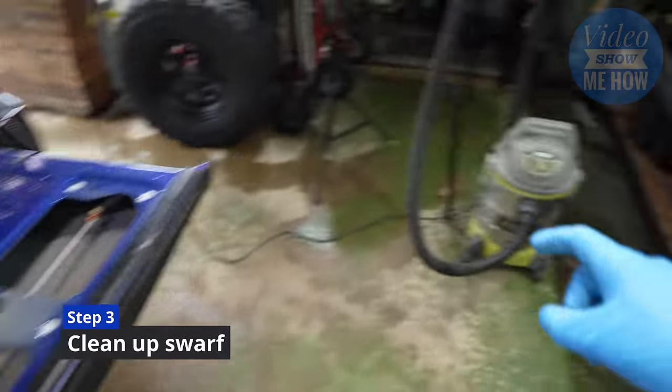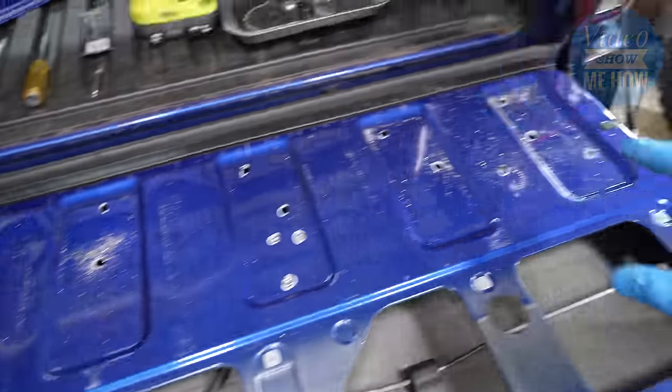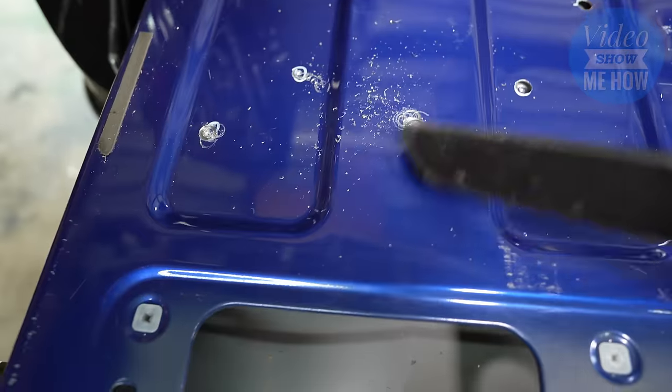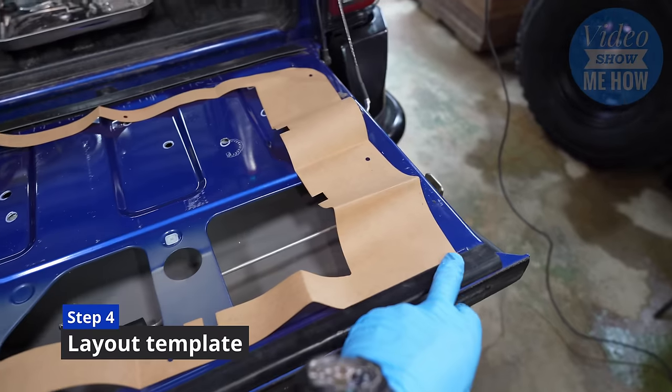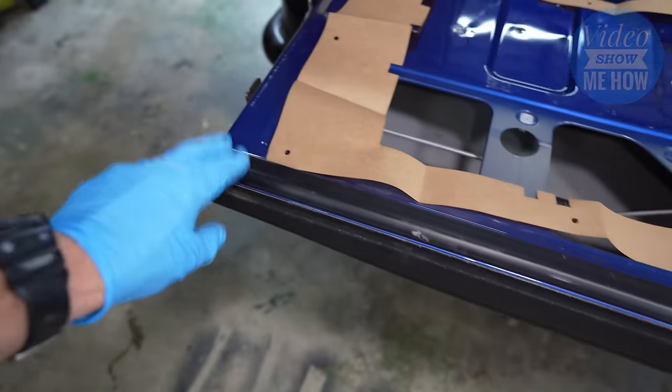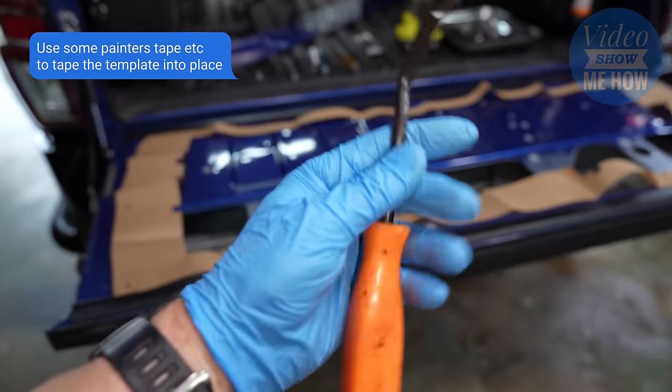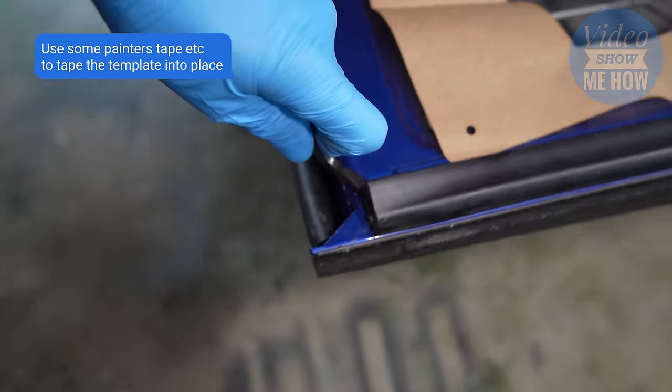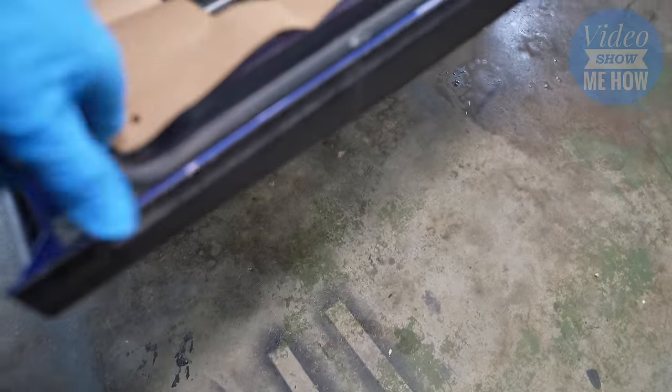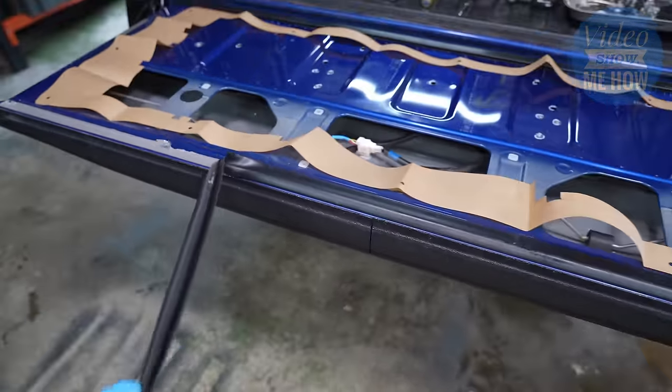The next step here is to grab your shop vac or whatever you've got at hand. We want to just vacuum up all of the swarf. Now, just lay your template out just like this. And at this point, you will need to remove these two rubber strips. There's one at the front, one at the back. Just grab a trim removal tool and you can get in just underneath and strip up one side. It's just double-sided taped on. And then you can pull the whole lot off in one go.